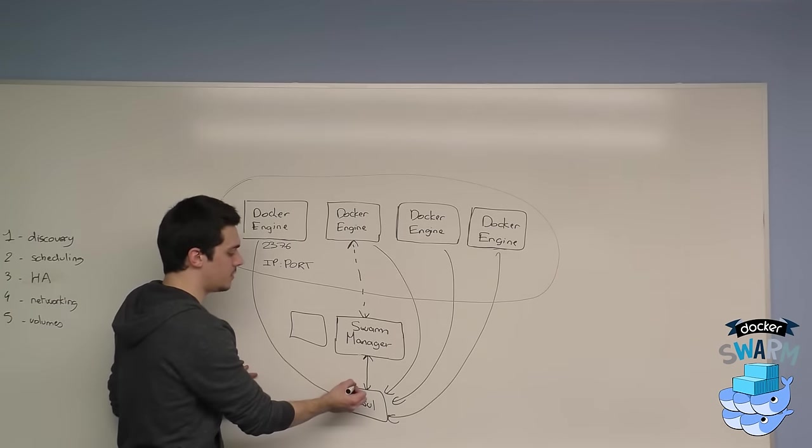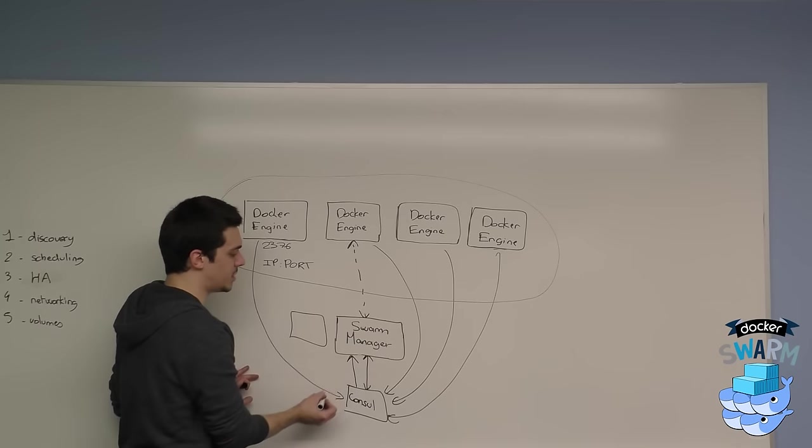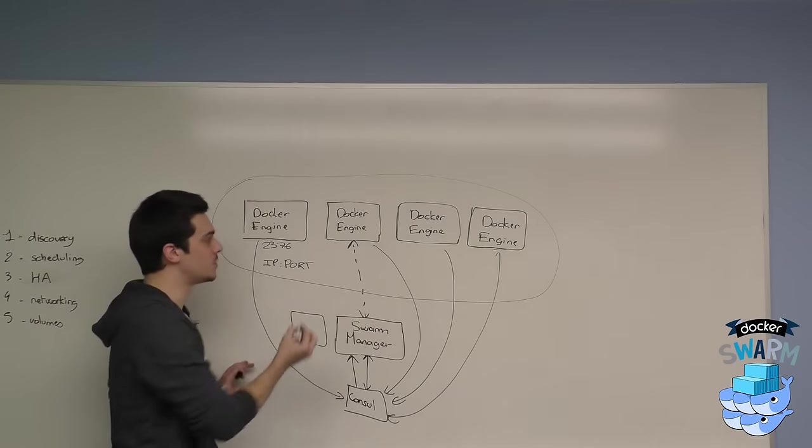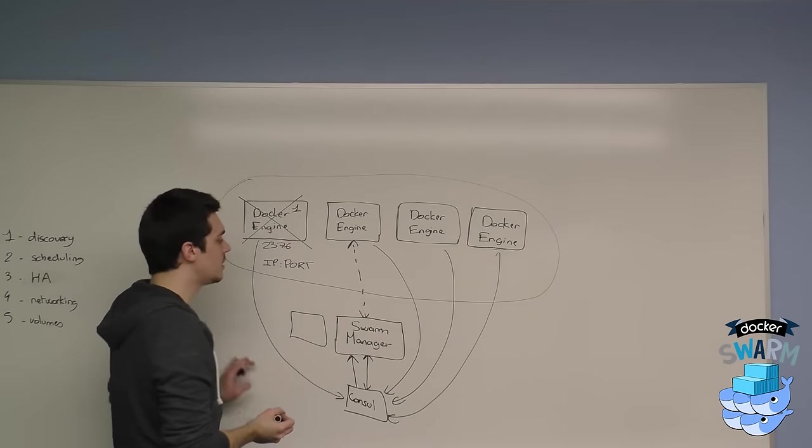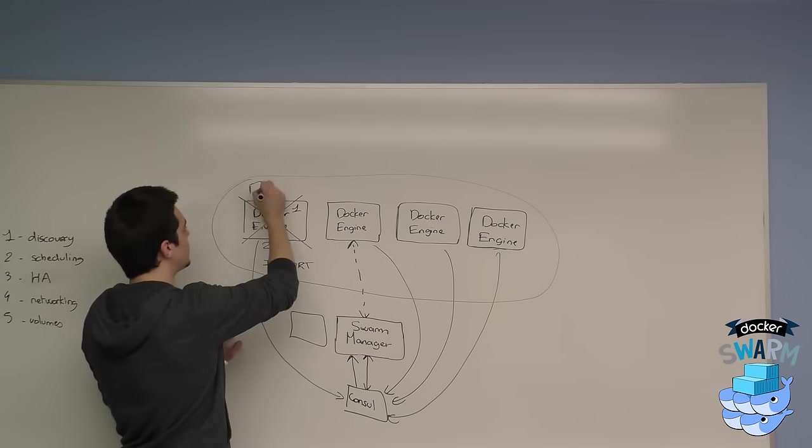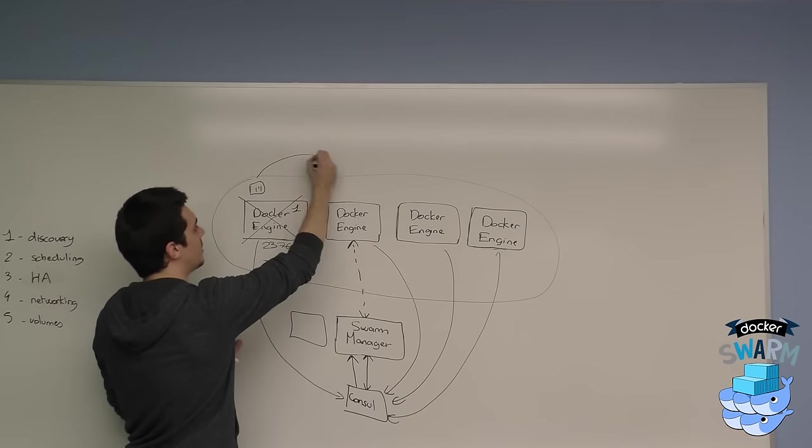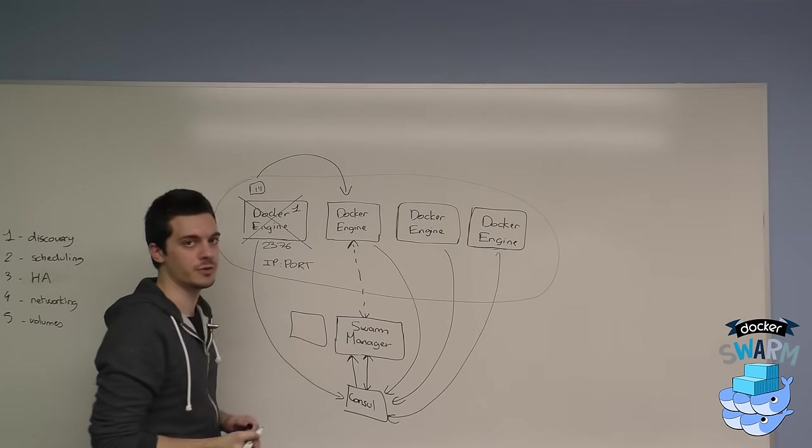Because if they are not healthy and running, the distributed store is going to notify the manager saying, well, I think the first one here died and you should remove it from your list. Or you should make sure that the containers that are running on top are rebalanced somewhere else. For example, on the second docker engine.